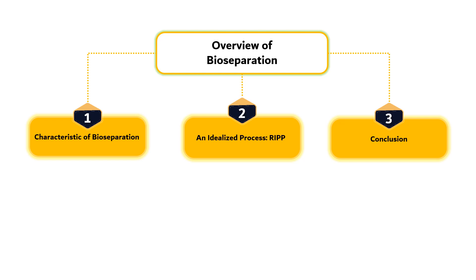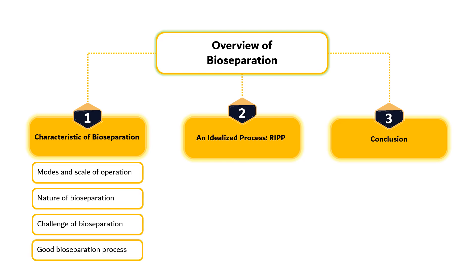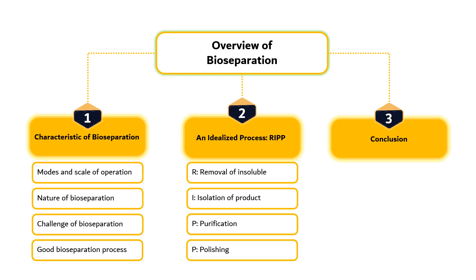Characteristics of bio-separation include common modes and scale of operation, nature and challenge of bio-separation, and the good bio-separation process. An idealized process emphasizes four steps in bio-separation known as RIPP: R stands for removal of insolubles, I stands for isolation of products, the first P stands for purification, and the second P stands for polishing.